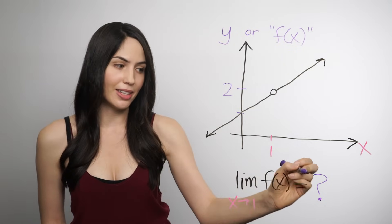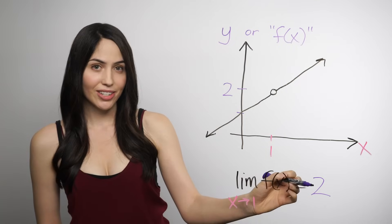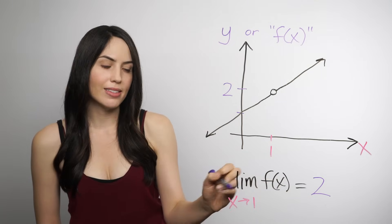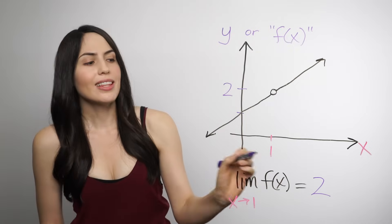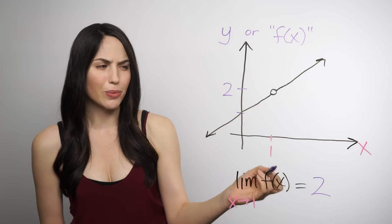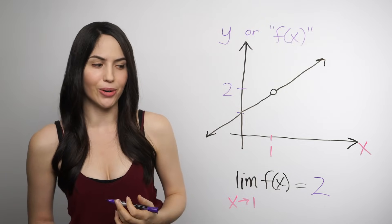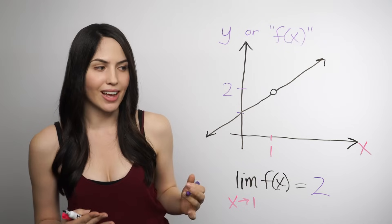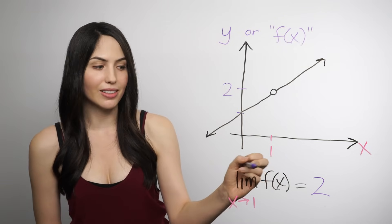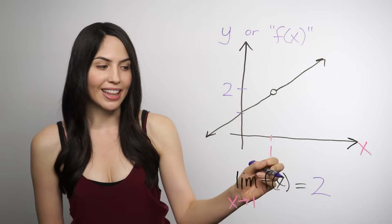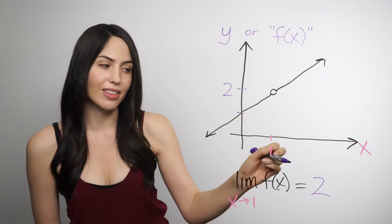We can write that the limit is equal to 2. Remember, that limit answer is always a y value — there might have been some x value here, but the limit is always a y value. One thing that confuses people is the equal sign. Some people wonder why you can use an equal sign — how can you say it's equal if you were just saying it's approaching a number or getting really close and not actually touching exactly the number? That's a great question. It's just the limit notation, the limit language. We can say the limit equals a number, and it just means that's what the function is approaching.